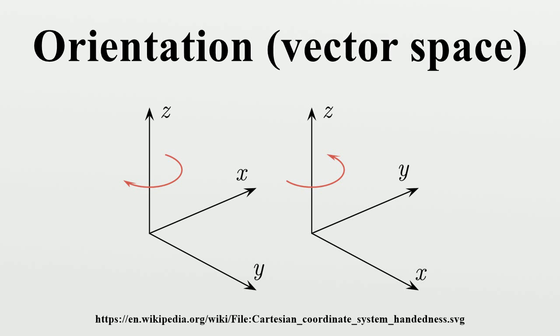A vector space with an orientation selected is called an oriented vector space, while one not having an orientation selected is called unoriented.